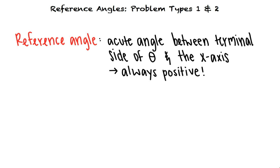Why don't we take a look at an example problem? Let's find the reference angle for negative 8π over 9. To do this, we need to find the acute angle formed by the terminal side of negative 8π over 9 and the x-axis.